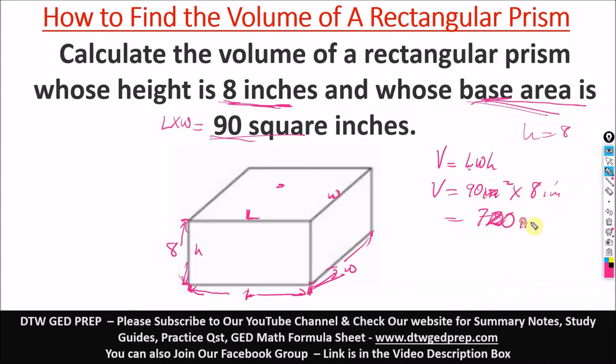It will be 720 cubic inches. Volume is always cubic inches. When you multiply square inches and inches, you're going to get cubic inches. So this is our answer.